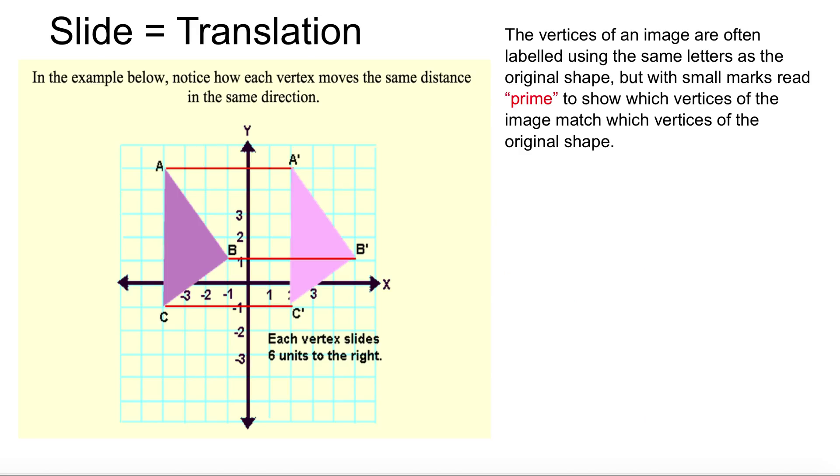Now, quick example here. So slide, or as it's called now, forever and always, will be called translation. Vertices of an image are often labeled using the same letters as the original shape, but with small marks that read prime.